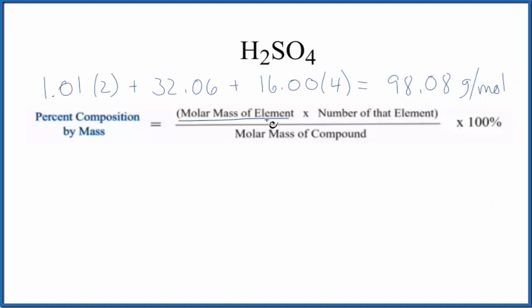We'll find the molar mass for each element on the periodic table and multiply that by the number of that element. Let's do hydrogen. For hydrogen, we have a molar mass from the periodic table of 1.01 grams per mole.